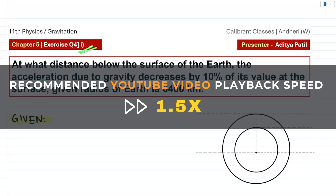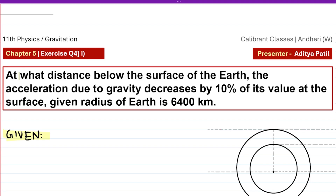We are discussing the first numerical from the exercise for the chapter gravitation. The question says: at what distance below the surface of the earth does the acceleration due to gravity decrease by 10% of its value at the surface, given the radius of the earth is 6400 km?